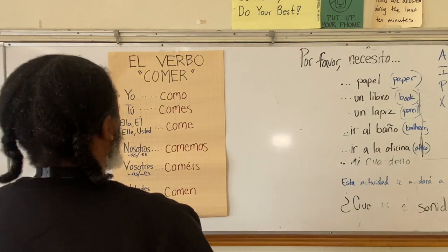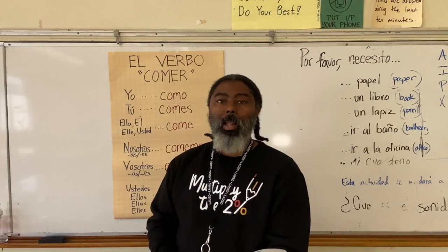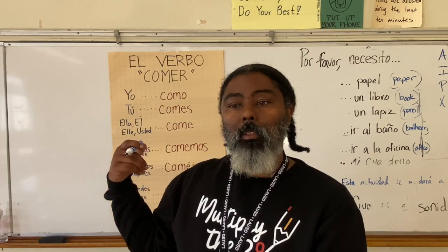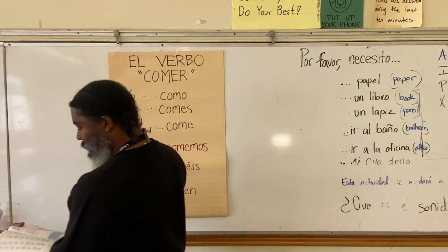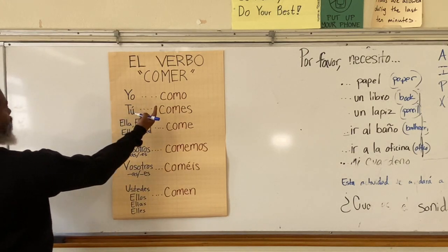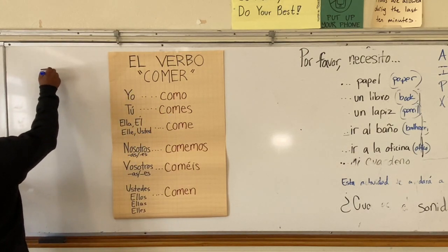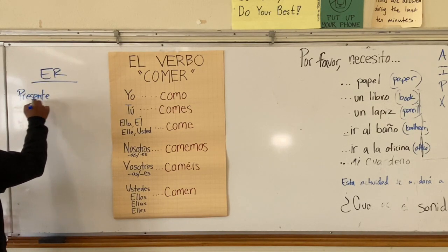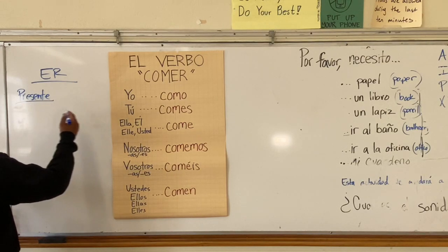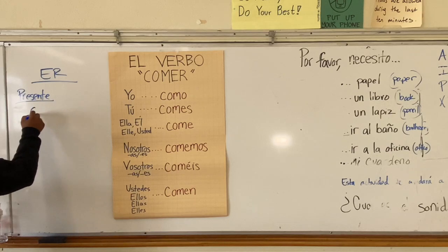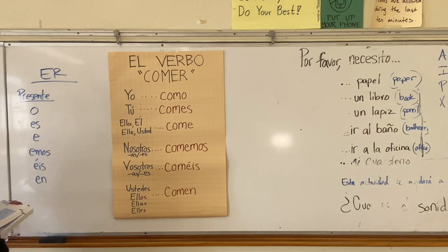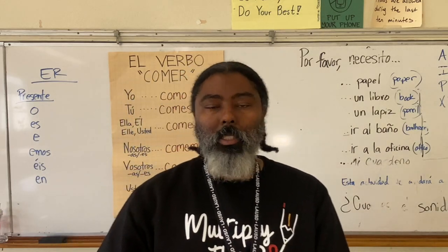Let's continue looking at ER verb conjugations. Especialmente, let's look at the verb comer. We've learned to conjugate this verb, an ER verb. If we want to talk about the present tense, we have to conjugate the ER — the last two letters — so that they follow O, S, E, EMOS, EIS, EN, in order to speak about the present tense.